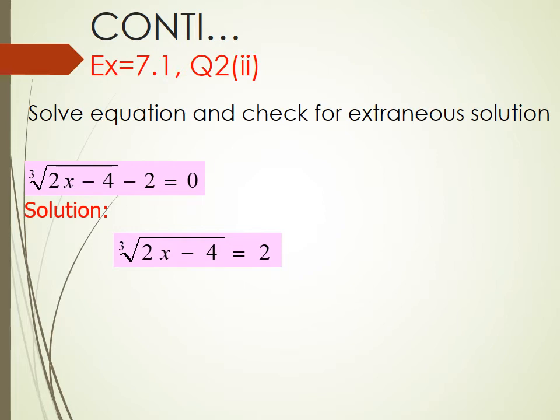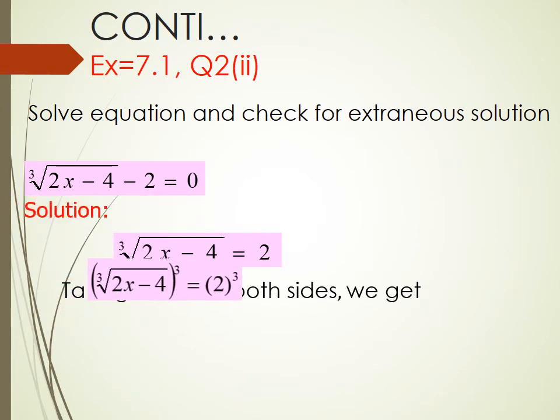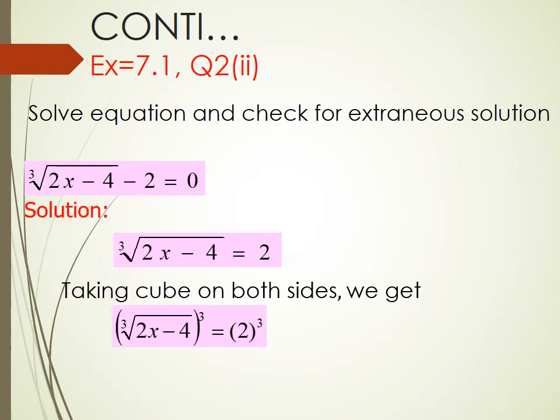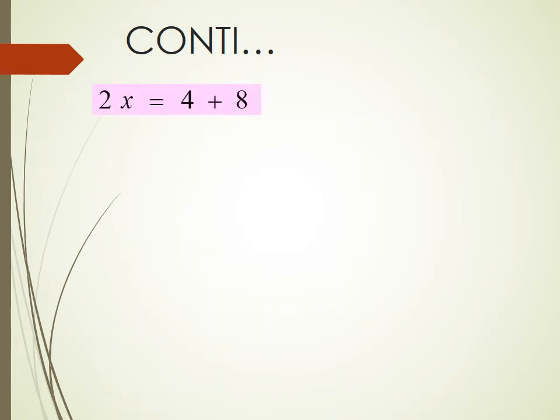For removing cube root, we will take cube on both sides. Taking cube on both sides of equation, we get cube root of 2x minus 4 whole cube equal to 2 cube. After cancelling, we get 2x minus 4 equal to 8. 2x equal to 4 plus 8. We shift 4 to the other side. After simplifying, we get 2x equals to 12.